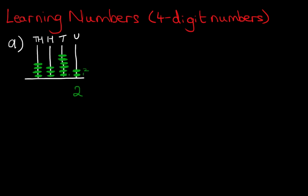How about the tens? One, two, three, four, five, six. There are six tens. And now the hundreds. One, two, three. And lastly, the thousands. One, two, three, four.